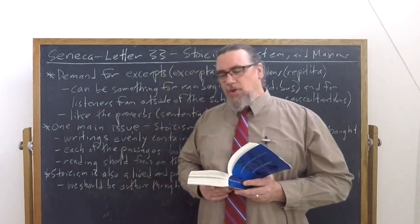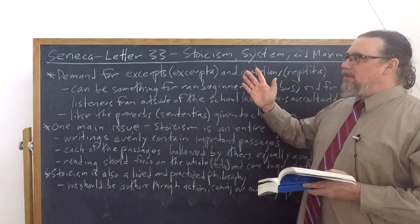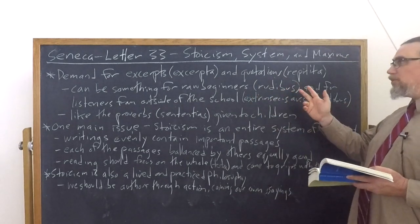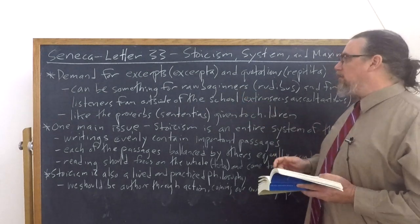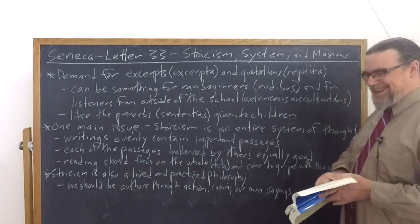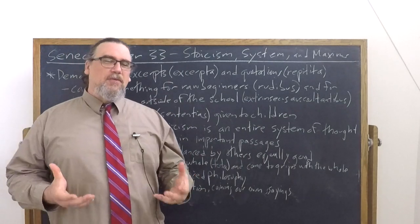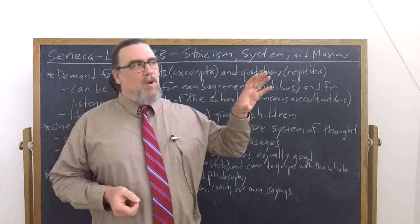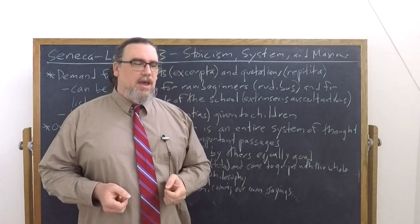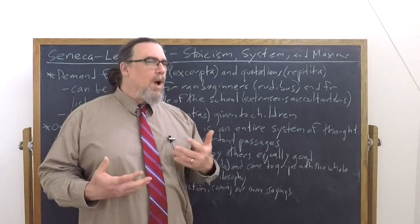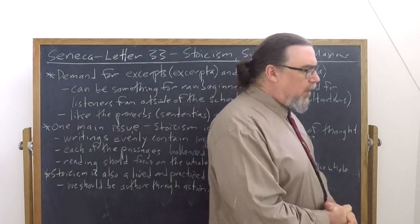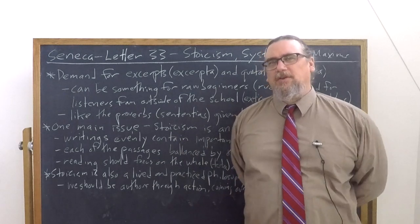So he says, I'm sure these do a great deal. They give a lot, magna, to raw beginners, rudibus, and listeners from outside of the school, extrinsicus auscultantibus, in the Latin. So he's saying these are useful for a certain kind of person. They're useful for people who are interested in Stoicism, but are at this point outside of the school. But what's the implication here? This isn't good for anybody who's actually going to make any progress.